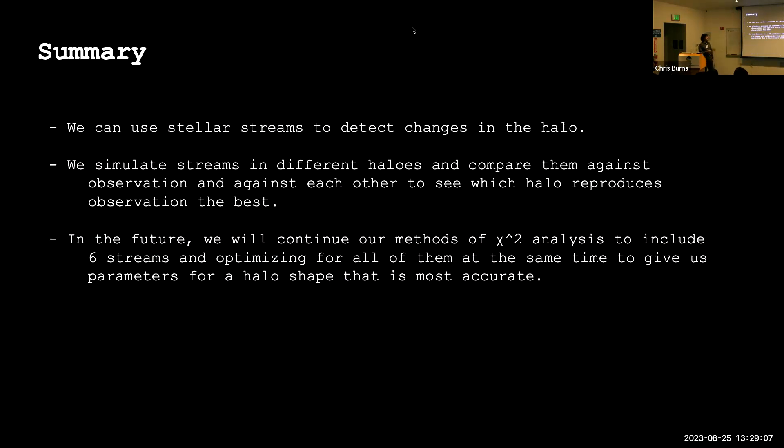So in summary, stellar streams are good at detecting changes in the dark matter distribution. What we will do is simulate streams in different dark matter distributions and compare them to observation. We will see which dark matter distribution produces the best fit for each of the streams, and that will allow us to constrain how much the dark matter halo might actually be tilted with respect to the galactic plane. Thank you.